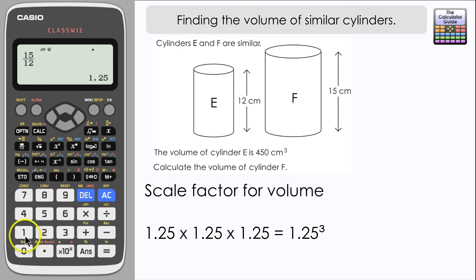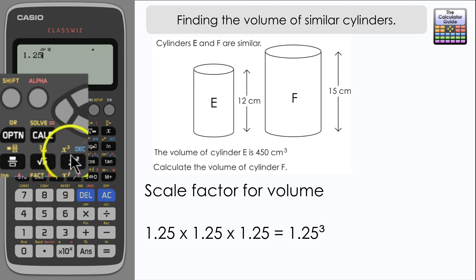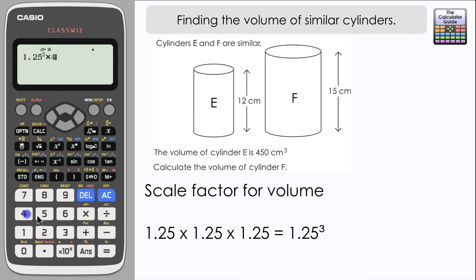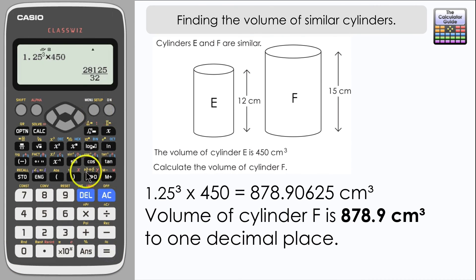Using the calculator we're going to input 1.25 cubed. The cube function is accessed by pressing shift and x squared. You'll see a little yellow x cubed in the top left hand corner. And then we're going to multiply that by the volume of cylinder E which is 450.